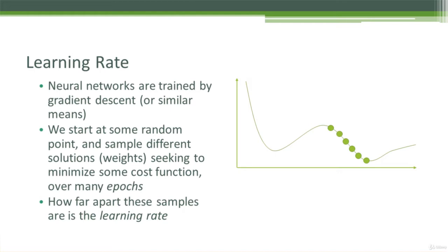So we need to have some sort of rhyme and reason as to how we make those samples of different solutions, different weights. If we were to boil this down into sort of a two-dimensional graph, maybe it would look something like this, where we're just sampling different points here along a curve of solutions, and we're trying to find the one that minimizes the cost function.